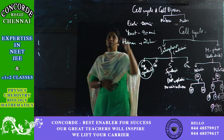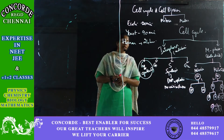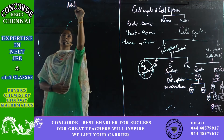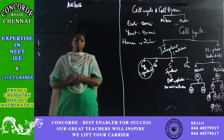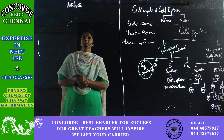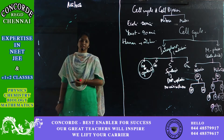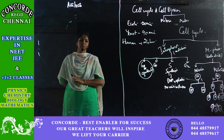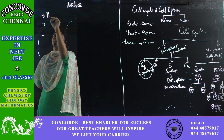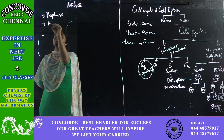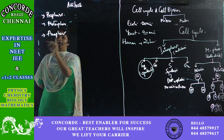Mitosis is the type of cell division found in almost all body cells, except the reproductive cells. The importance of mitosis is that the chromosomal number is maintained — there is no reduction. Mitosis will occur in 4 stages: prophase, metaphase, anaphase, and telophase.